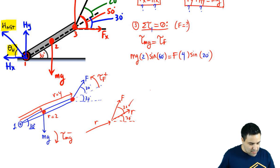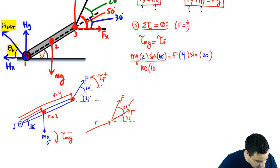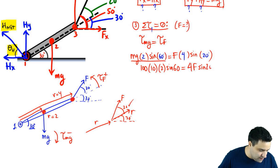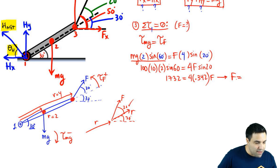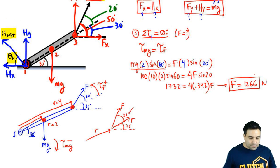So if you plug this in, this entire thing here, MG, is going to be 100, 10, 2, sine of 60. This is 4, F, sine of 20. And the whole thing on the left side is going to be 1732 equals 4.342, that's the sine of 20, F. And if you solve for F, you get F equals 1266. So I got the whole F. That's good news.